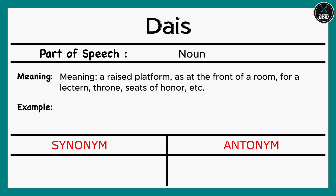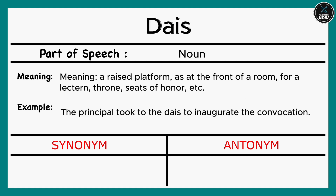Dais: A raised platform, as at the front of a room, for a lectern, throne, seats of honor, etc. Example: The principal took to the dais to inaugurate the convocation. Synonyms: Podium, Rostrum, Stage, Platform.